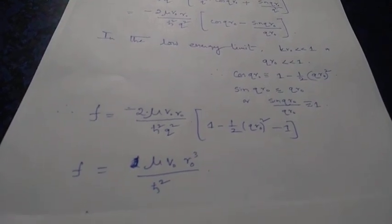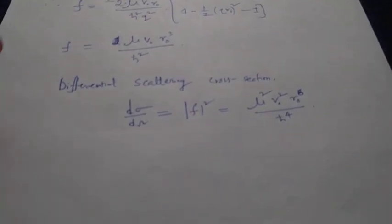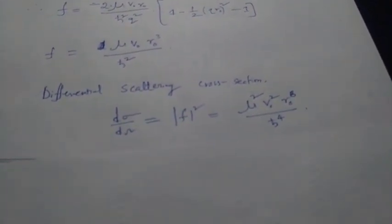The final expression for scattering amplitude is f equals μV-naught·r-naught³/ℏ². The differential scattering cross-section is the modulus squared of f: dσ/dΩ equals μ²V-naught²r-naught⁶/ℏ⁴. The total scattering cross-section integrates over theta and phi; since dσ/dΩ is independent of both angles, integrating sin(θ)dθ from 0 to π gives 2, and integrating dφ from 0 to 2π gives 2π, yielding a total cross-section of 4π·μ²V-naught²r-naught⁶/ℏ⁴.